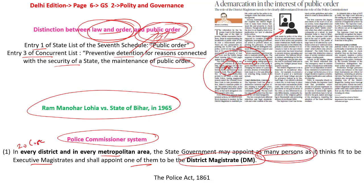Now that we understand who the district magistrate is, what is his job role? He is also called the district collector when acting in a revenue capacity, but our focus is only on public order. When there is a breach of peace in a district, who takes charge? The district magistrate. For grievance redressal, the district magistrate. For preventive arrest — if a person can create instability and disturb the peace and tranquility of a region — it is the district magistrate who steps in, calling police officers to make the preventive detention.